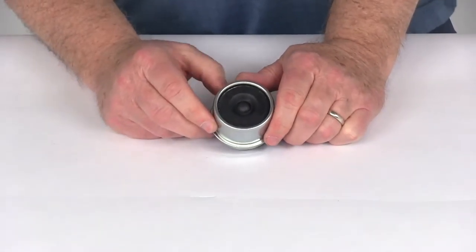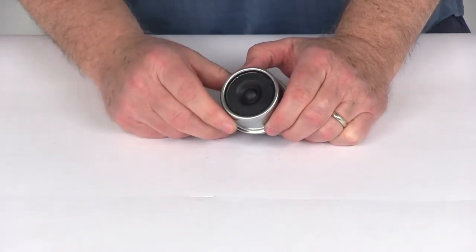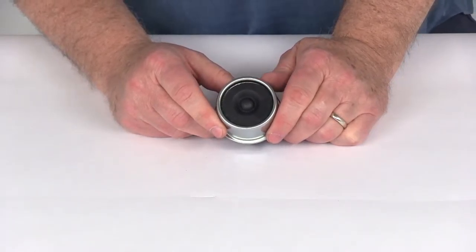Today we're going to look at the Trailer Hub Easy Lube Grease Cap and Plug, number DC200L-DCRP.